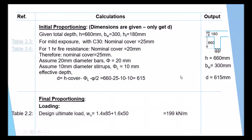Now we continue to the final proportioning, starting by calculating loads. The loads are already given as total live load and total dead load including self-weight, everything in kilonewtons per meter. These are service loads, so the design ultimate load W_ultimate equals 1.4 times dead load plus 1.6 times live load, giving a total load of 199 kilonewtons per meter.